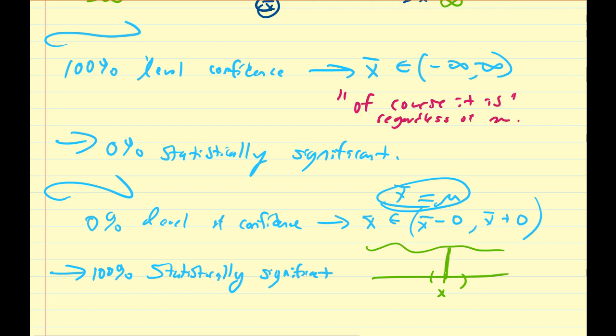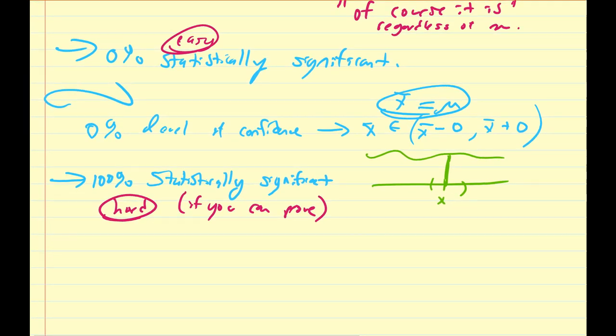So this is going to be a hard statement to prove, whereas this first one is an easy statement to prove. Not necessarily easy, but overall trivial to prove. Anyone can prove a 0% statistically significant experience.